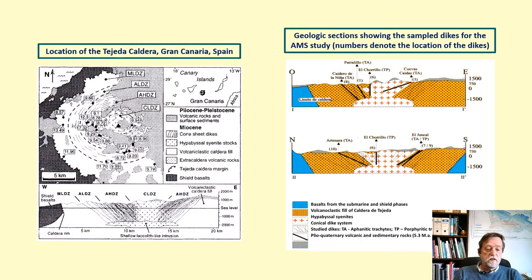The intrusives include trachytic and phonolitic cone sheets, dikes, and hyperabyssal syenite stocks belonging to an intrusive complex of 20 km diameter in the Miocene Tejeda caldera.